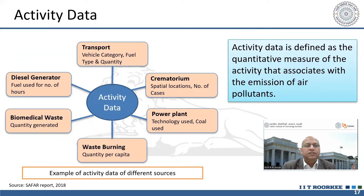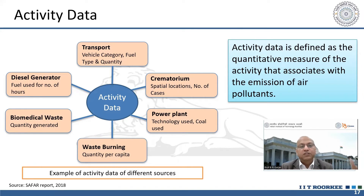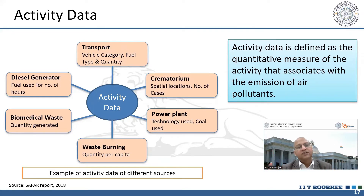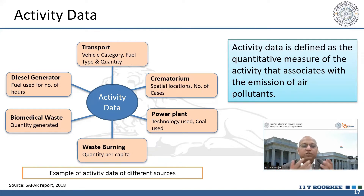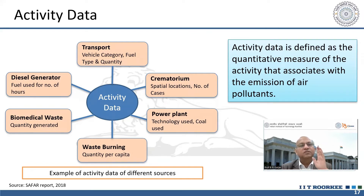Activity data depends on: for transport — vehicle category, fuel type, and quantity of fuel; for crematoriums — number of cases and locations; for power plants — what kind of technology is used, whether coal-based or gas-based; for diesel generators — fuel used and hours of operation; for biomedical waste — quantity and type of waste; for waste burning — how much waste is burned and its nature, including organic and inorganic content. As much activity data you can capture, your emission inventory will be that much finer.